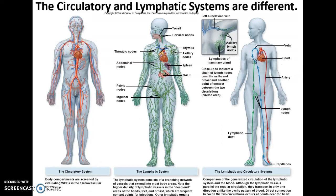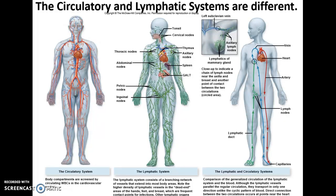One important feature of the second line of defense is that it utilizes both the circulatory and lymphatic systems. It's important to understand that the lymphatic and circulatory systems are separate — they are different but they work very much together. On the left side you see a diagram of the circulatory system where body compartments are screened by circulating white blood cells. The red vessels including the arteries carry blood away from the heart, and the blue vessels carry blood back to the heart and to the lungs so it can become reoxygenated.